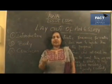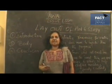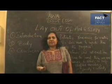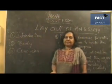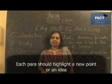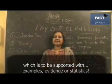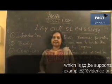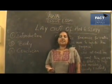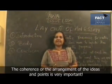High scorer issue essays often take the issue in the introduction itself to socio-cultural or historic backgrounds, which is very impressive and also fetches high scores. Coming to the body, the body of an issue essay should be three to four paragraphs. Each paragraph should highlight a new point or a new idea, supported with examples, evidence, or statistics. The coherence and arrangement of your ideas is very important.